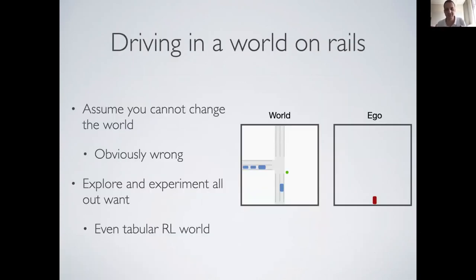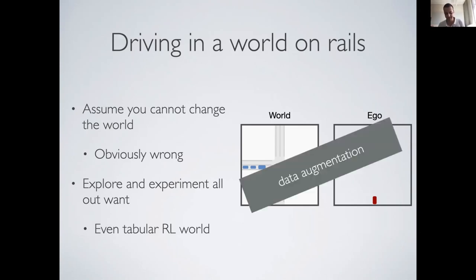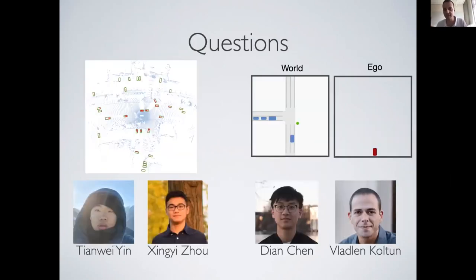The nice thing about the world-on-rails approach is that once we make this assumption, we can use all the datasets collected so far and run reinforcement learning on them. It simplifies RL to the point where you only need tabular evaluations — no value function approximations, just tables and some interpolation. This essentially gives back some of the data augmentation that was missing from original policy learning.